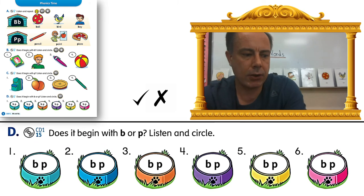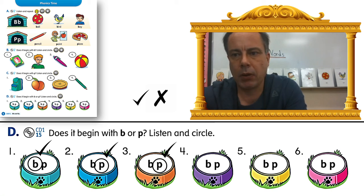The correct answers are: number one, B, bike. Number two, P, pin. Number three, P, pot. Number four, B, bell. Number five, P, put. And number six, B, bean.